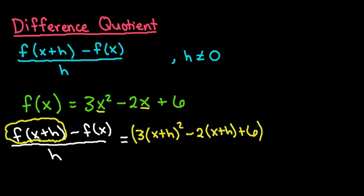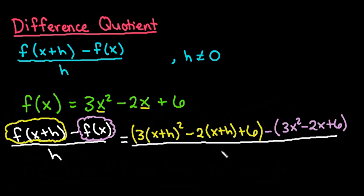And then I'm going to subtract from it f of x. So I'm going to take this equation here, and I'm going to subtract just the original function. So 3x squared minus 2x plus 6. And I'm going to put the whole thing over h. So this whole thing will be divided by h.